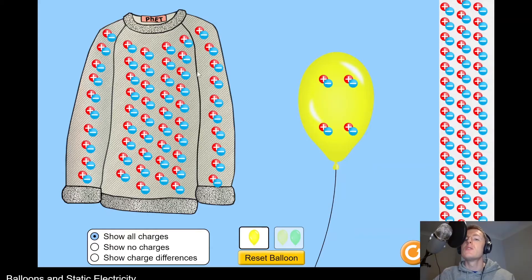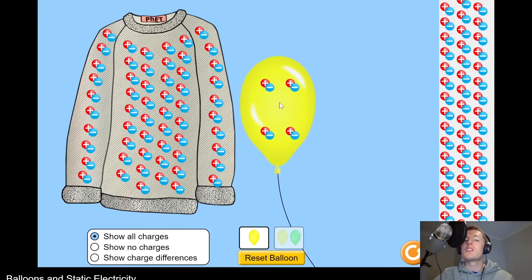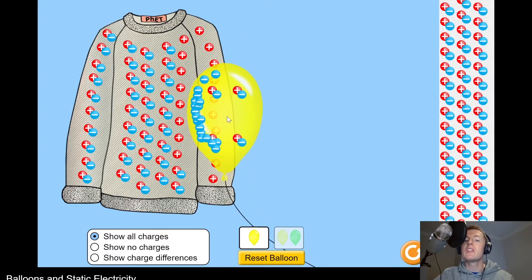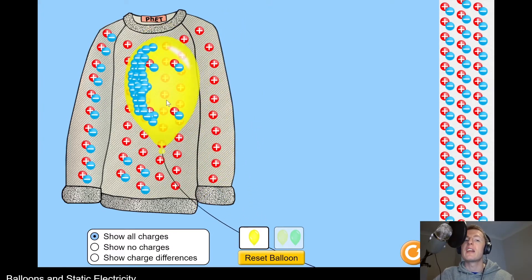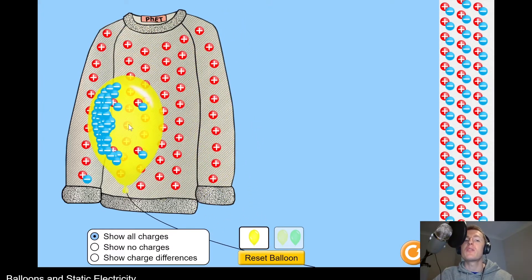And just to show you a simulation of this, you'll see if we start off with a balloon with some charge on it and a jumper with some charge on it, if we bring the balloon over towards the jumper and rub the jumper with it, you'll see that the surface of the balloon starts to collect and build up the negative charges from the jumper. And this leaves behind a positive charge on the jumper.